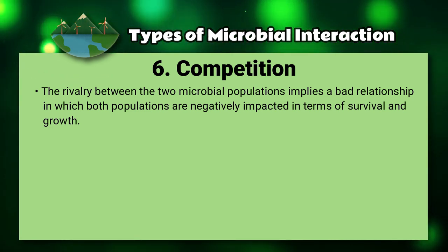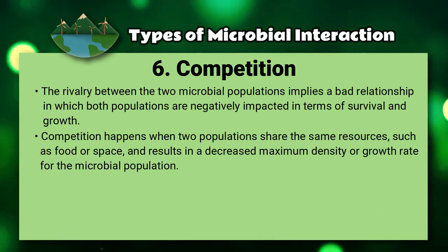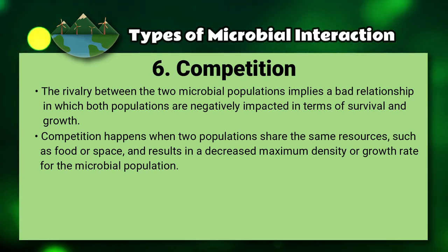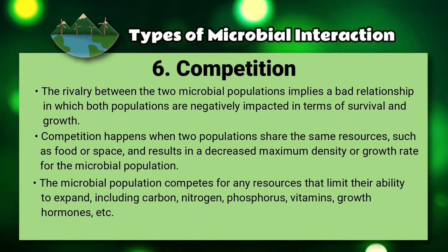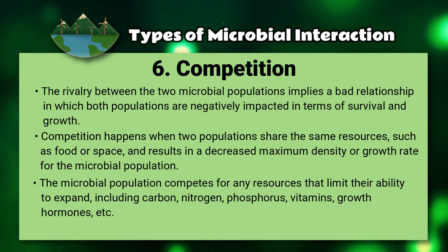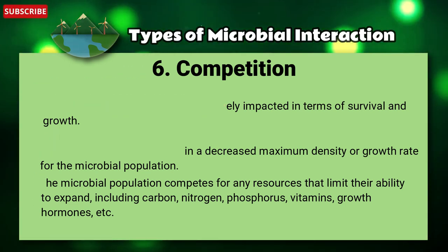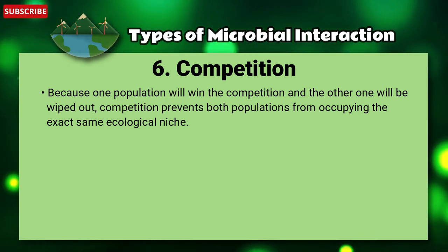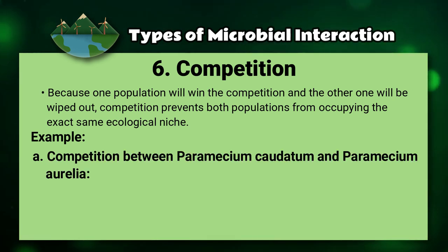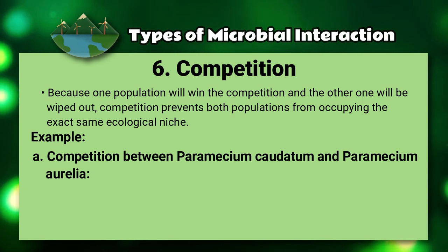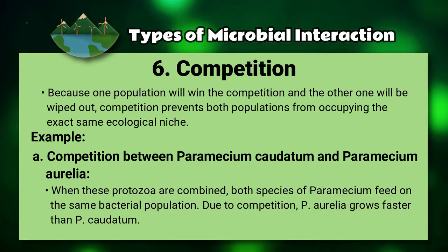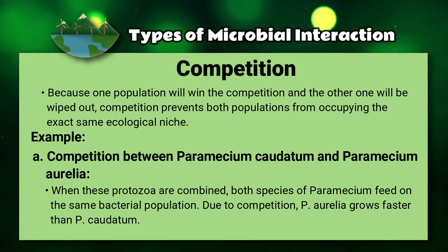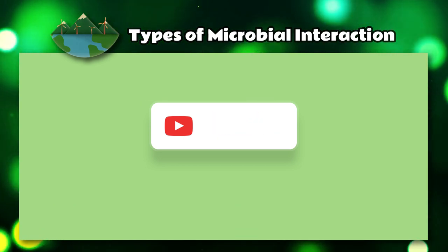Number six: competition. The rivalry between two microbial populations implies a bad relationship in which both populations are negatively impacted in terms of survival and growth. Competition happens when two populations share the same resources, such as food or space, resulting in decreased maximum density or growth rate. Populations compete for any resources that limit their ability to expand, including carbon, nitrogen, phosphorus, vitamins, and growth hormones. An example is competition between Paramecium caudatum and Paramecium aurelia — when combined, both feed on the same bacterial population, but Paramecium aurelia grows faster than Paramecium caudatum.